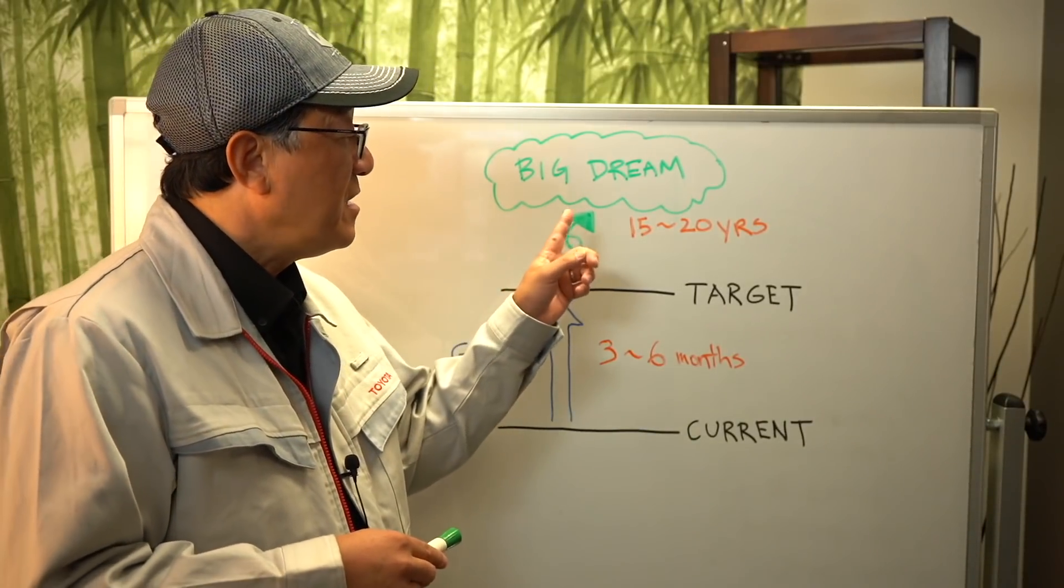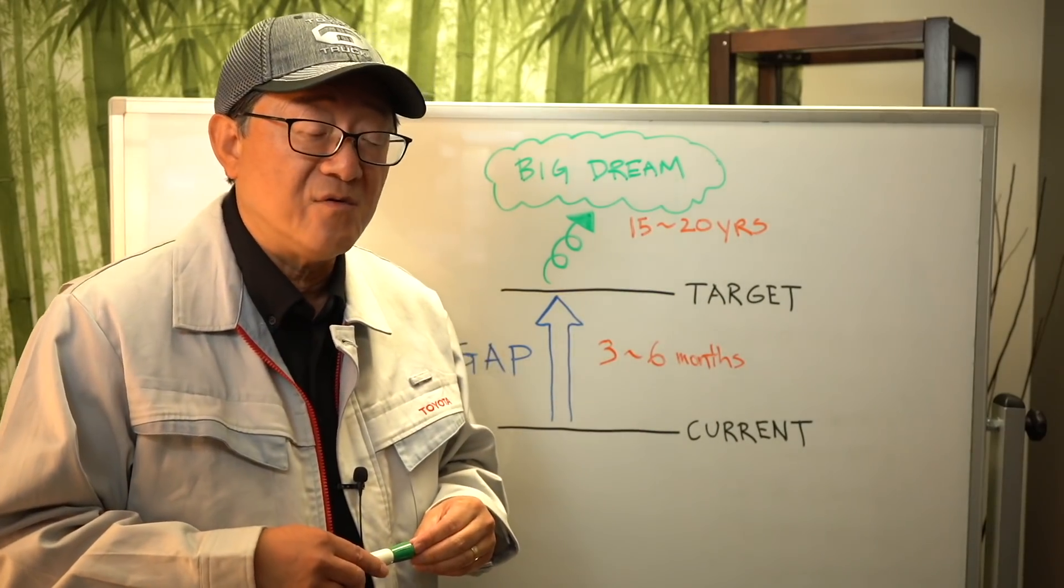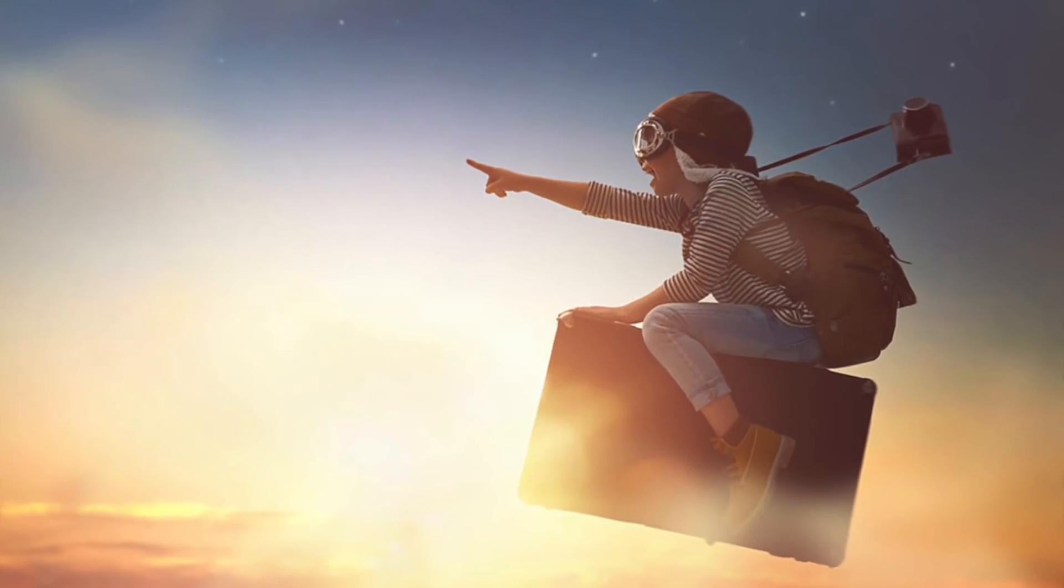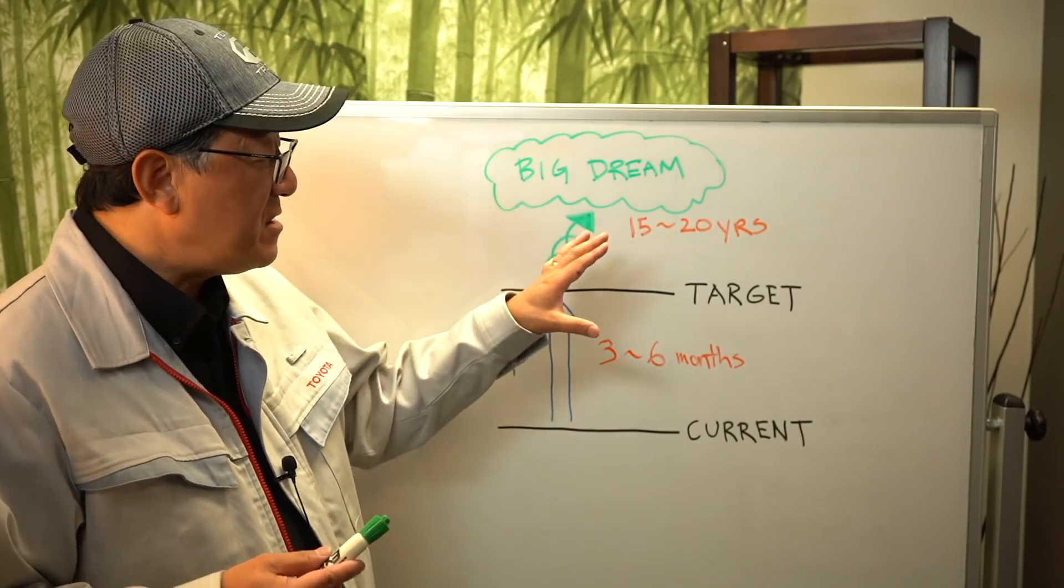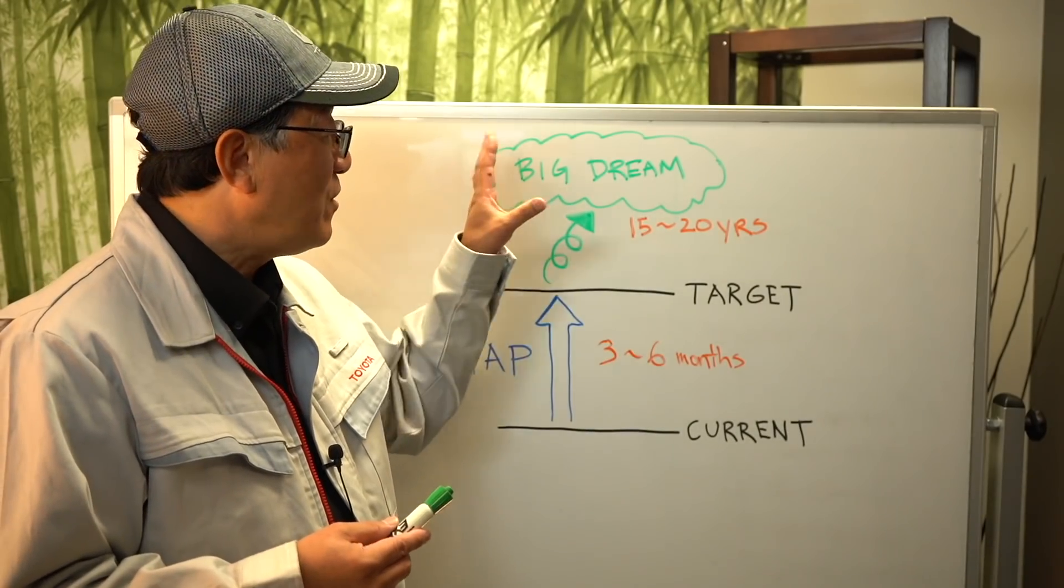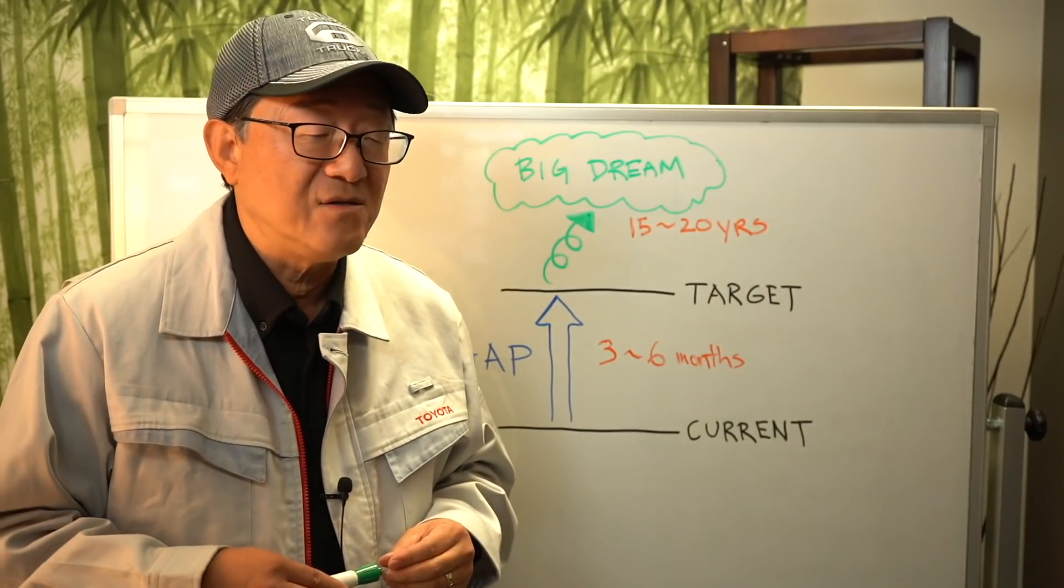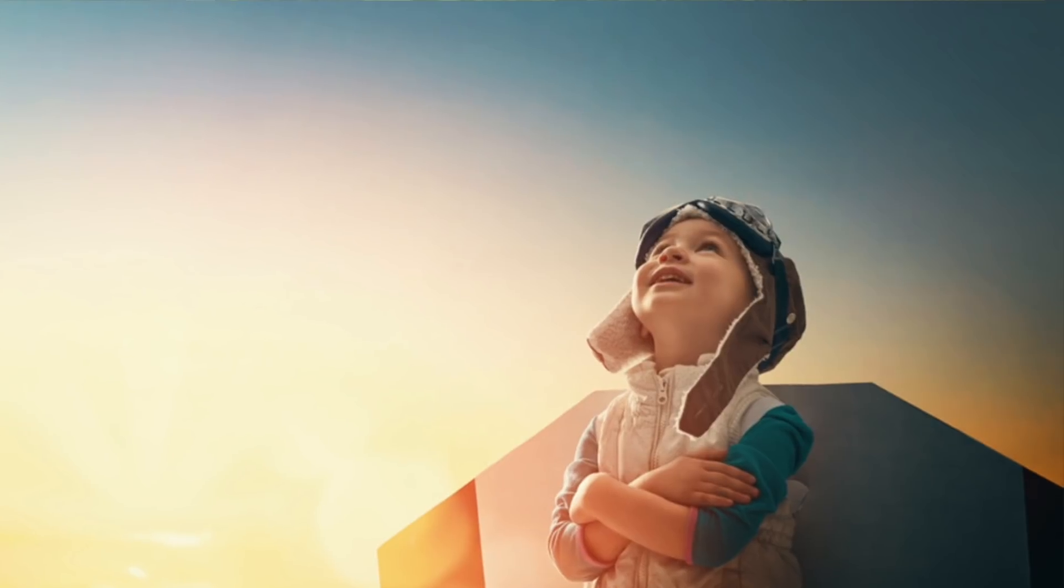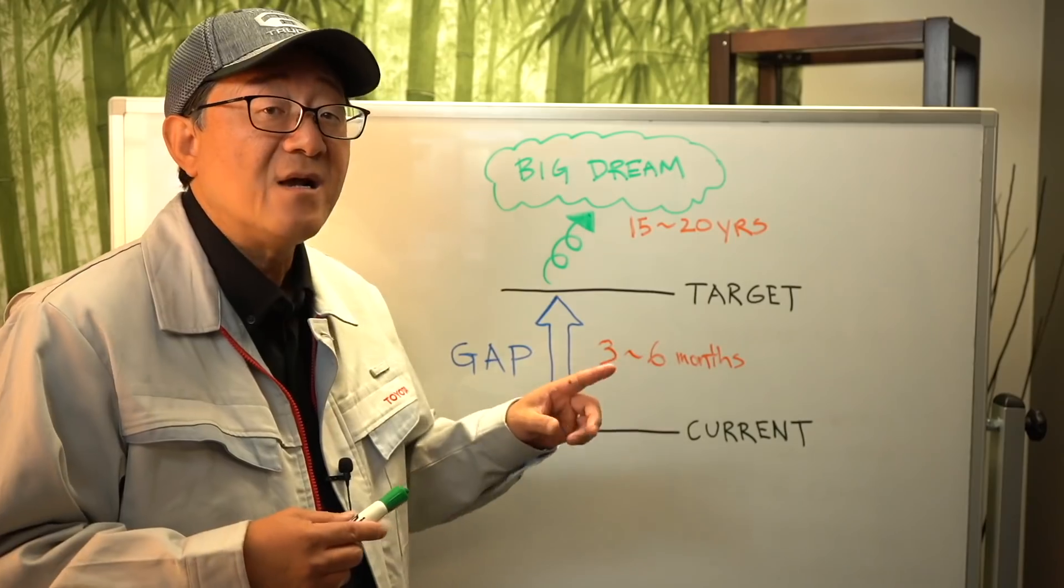They ask the question, in 15 or even 20 years, or perhaps 25 years down the road, what do you really want to do? We call this the big dream or dream state or ultimate dream. And they ask this question regardless of what you're trying to do here within three to six month gap statement. What do you want to actually accomplish way down the road, 20 to 25 years down the road? And then they want you to figure out whether that big dream can be linked or aligned to this problem statement.